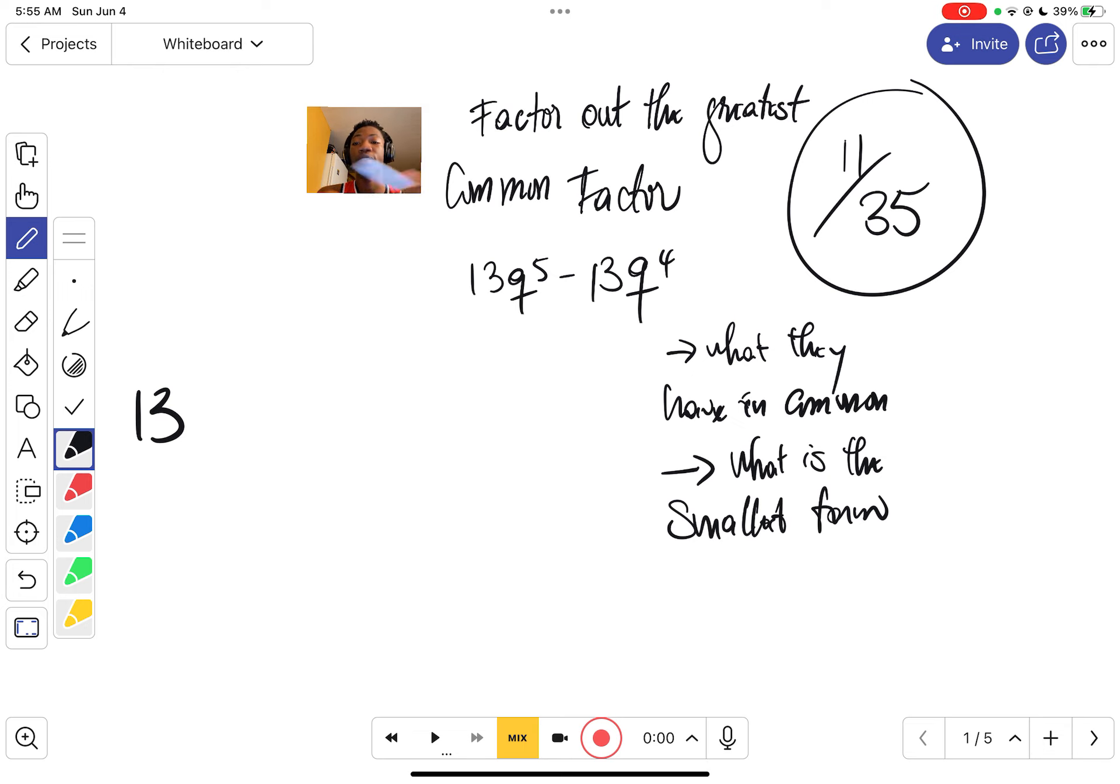We said that 13 is going to be in your answer because 13 is the thing that they're sharing together, the thing that they have in common, and also q. But which q? The smallest q, which is q^4. So it's going to be much easier for us to factor. We'll have 13q^4 and 13q^5.